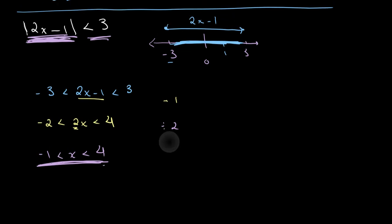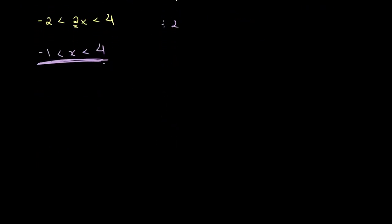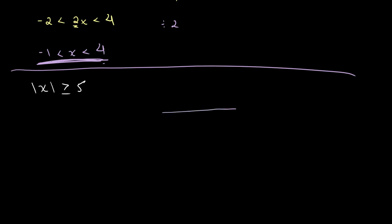Now let's switch things around. Earlier we had the absolute value of x is less than or equal to 5. What happens if we switch the sign and say the absolute value of x is greater than or equal to 5? We can draw this on a number line: here is 0, here is positive 5, and here is negative 5.